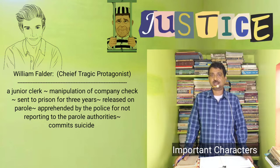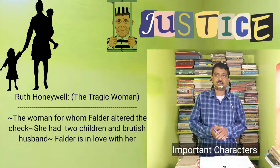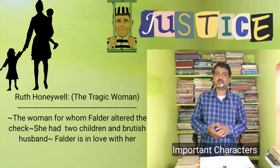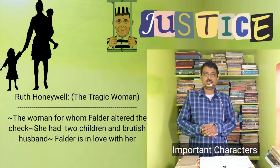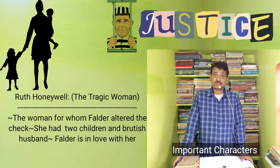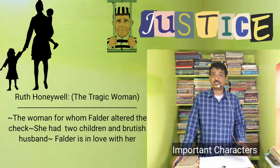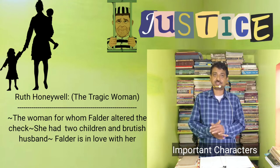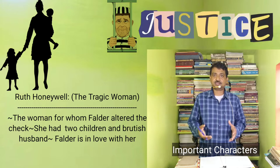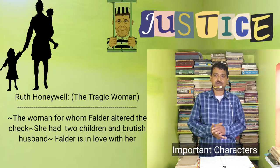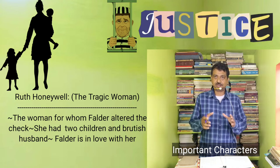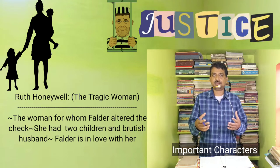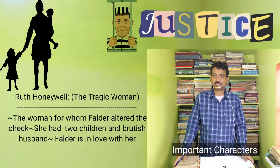Ruth Honeywill is the woman for whom Falder altered the cheque. He had intended to take Ruth and her two children away from her brutish husband, and he needed the money for the expenses they would incur when they left London. So primarily, Falder committed the crime for the noble cause of rescuing a woman.